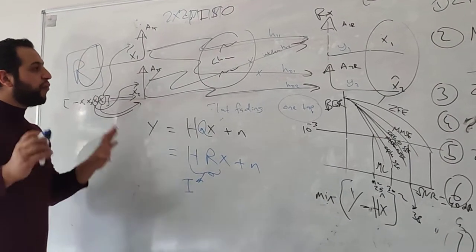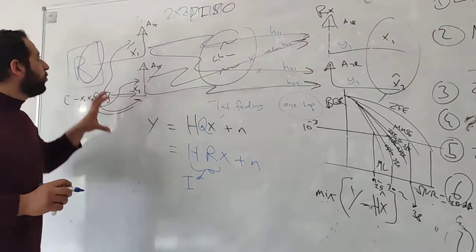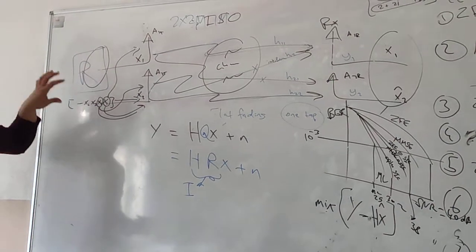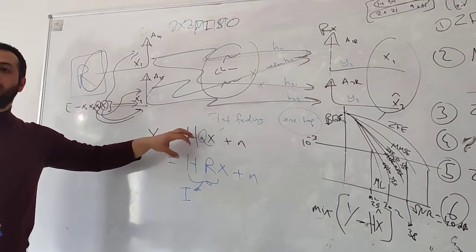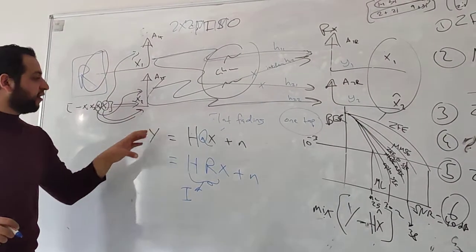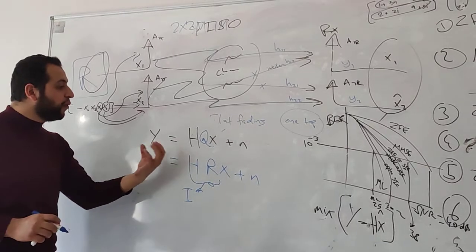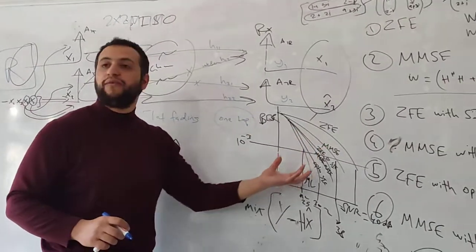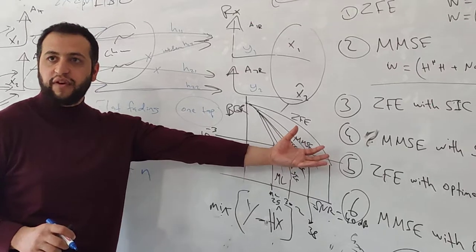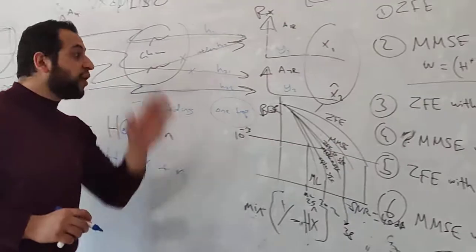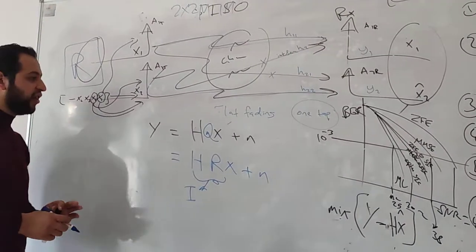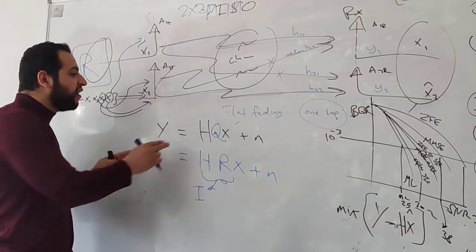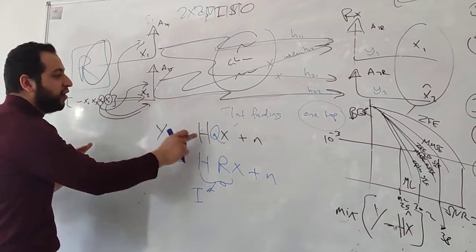So the signal — the point here — we want to design something at the transmitter so that when we multiply it by our signal and the signal reaches the receiver, we get the same quality of the signal as if we did equalization at the receiver, but without doing actual equalization at the receiver. So to design this, we need to add something at the transmitter.